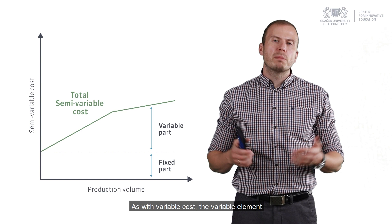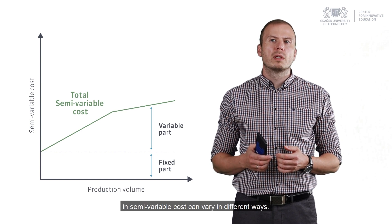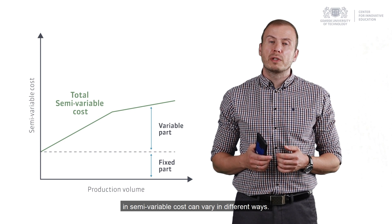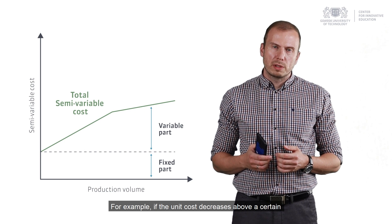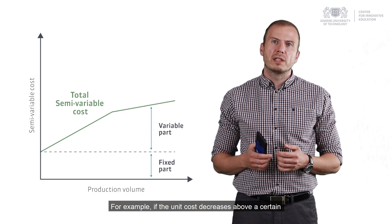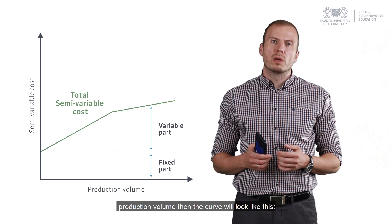As with variable cost, the variable element in semi-variable cost can vary in different ways. For example, if the unit cost decreases above a certain production volume, then the curve will look like this.